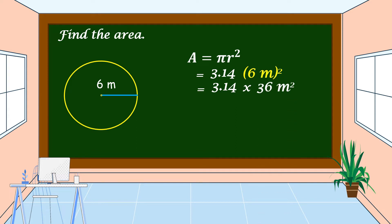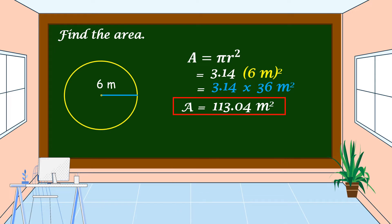6 meters times 6 meters is equal to 36 meters squared. Then let's find the product of 3.14 and 36 meters squared. The area is equal to 113.04 meters squared, or 113 and 4 hundredths meters squared. This is the area of this circle having 6 meters as a radius.